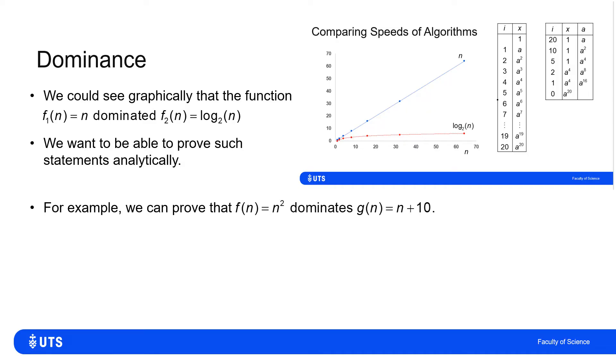I want to be able to prove it analytically. So I can show, for example, that the function f of n is n squared dominates the function g of n, which is n plus 10. That doesn't mean that n squared is always bigger than n plus 10, but it means that from some value n equals k onwards, it is.